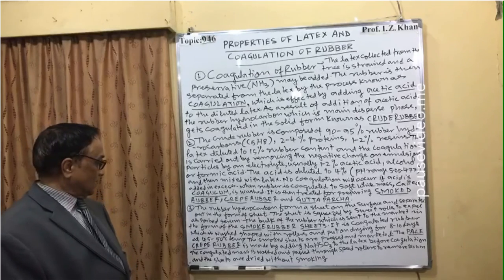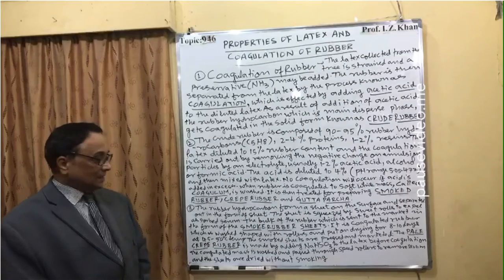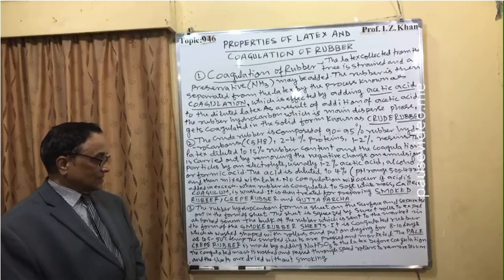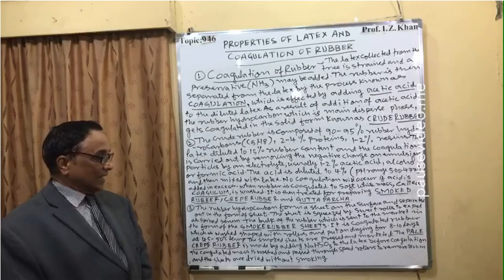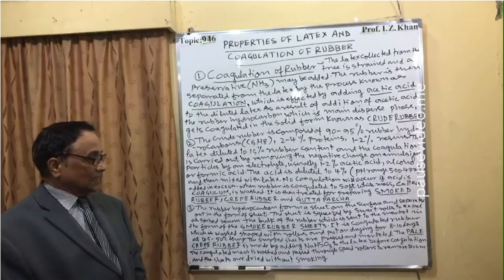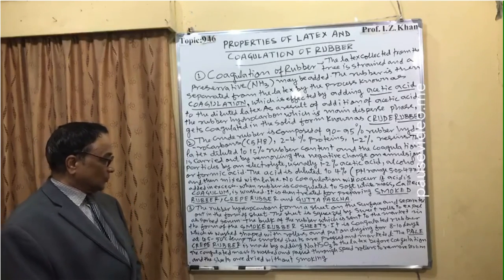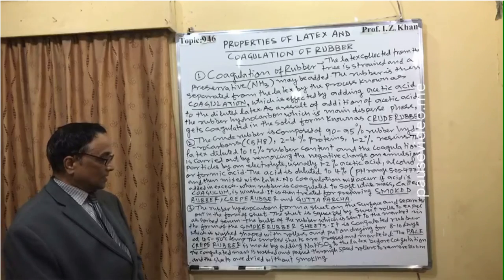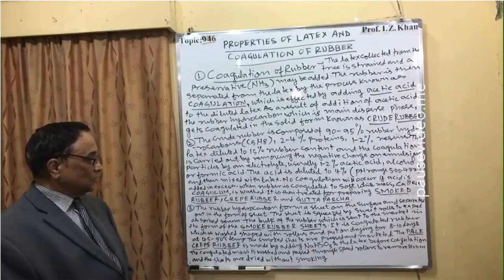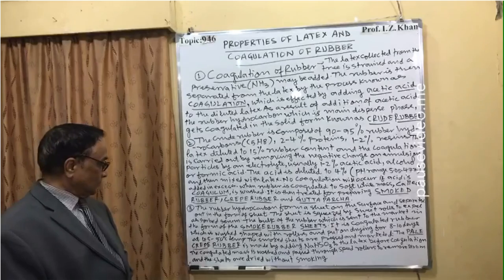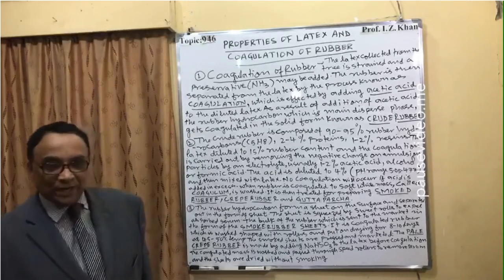Pale crepe rubber is made by adding sodium hydrogen sulfite (NaHSO3) to the latex before coagulation. The coagulated mass is washed and passed through speed rollers to remove serum, and the sheets are dried without smoking.